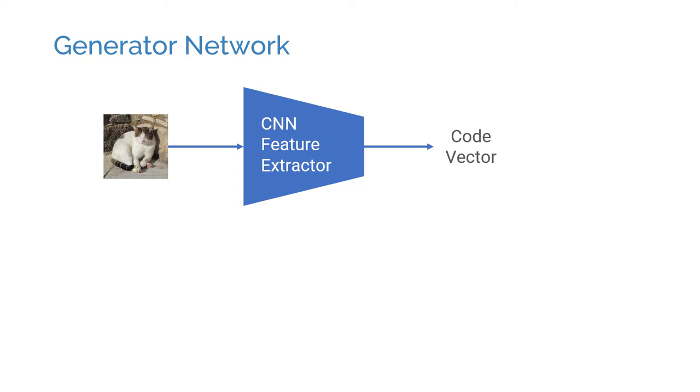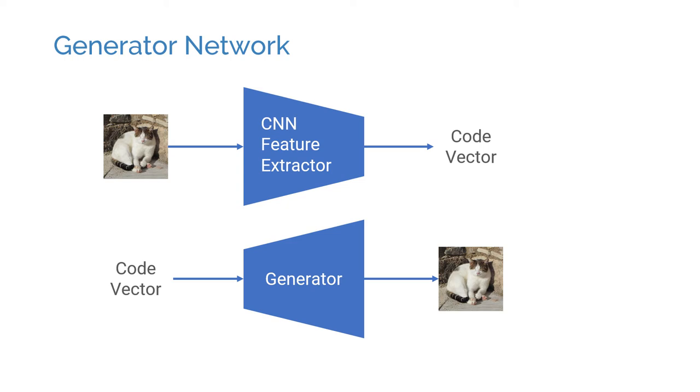What a generator network does is kind of the opposite. Given a code vector, which might just be random values, it generates a representative sample, like an image. The generator needs to learn to add realistic details to be able to fool the discriminator.